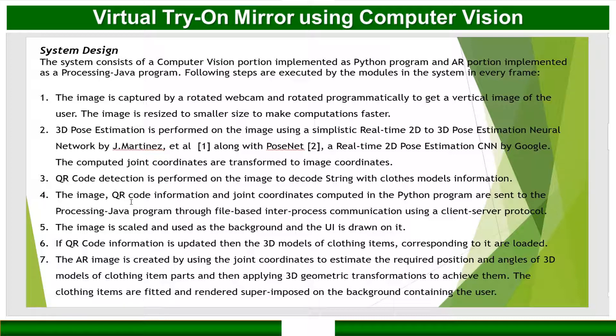The next step is to apply pose estimation on the image. We first apply 2D pose estimation using a convolutional neural network by Google. After that, we convert the 2D pose estimation to 3D pose estimation using a conversion algorithm selected from a research paper referenced in our work. The third part is QR code detection and decoding, which tells us which clothing model to retrieve from our stored data.